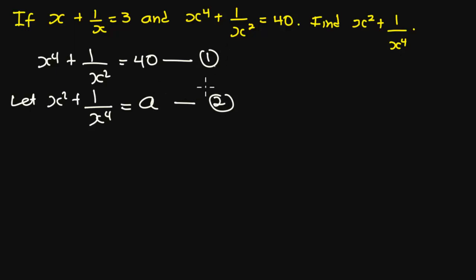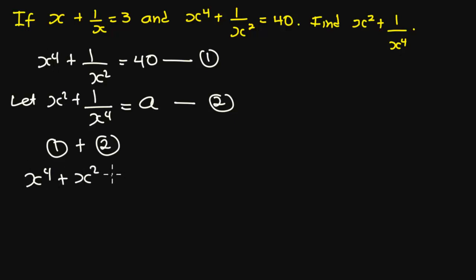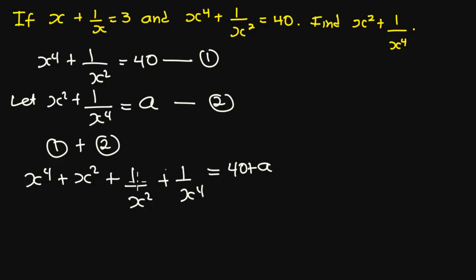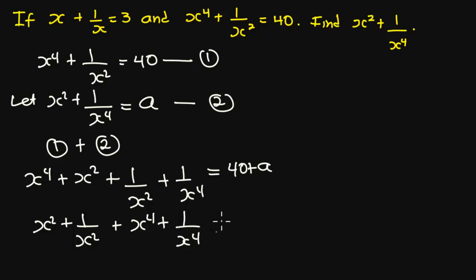From here, I'm going to add equation 1 to equation 2. So on the left-hand side, I'm going to have s to the power 4 plus s squared plus 1 over s squared plus 1 over s to the power 4. I can rewrite the left-hand side as s squared plus 1 over s squared plus s to the power 4 plus 1 over s to the power 4, equal to 40 plus a.